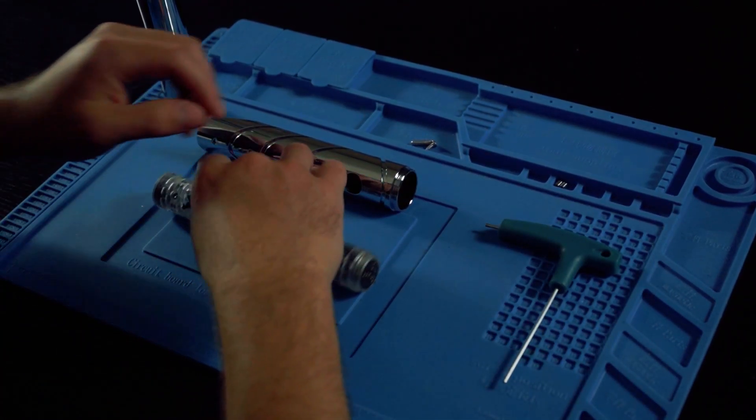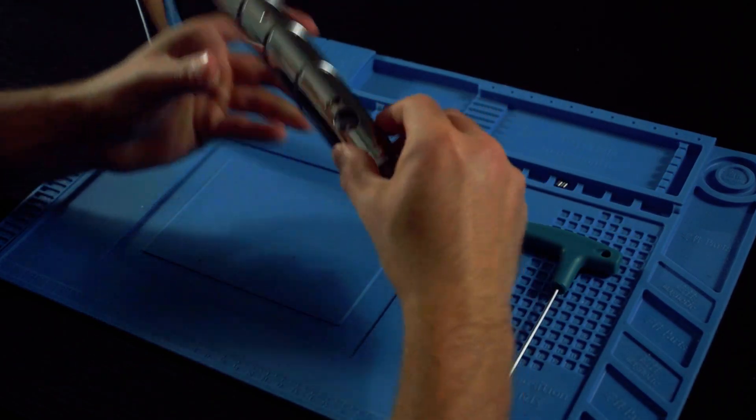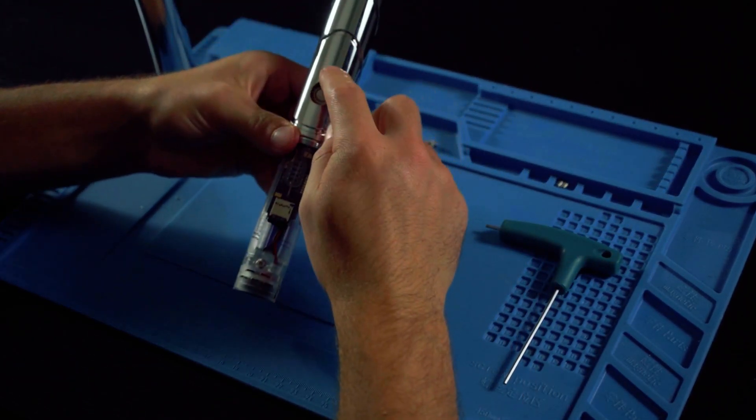To put it back together, we're going to go ahead and grab the top of the hilt, we're going to slide it in, and align the button and charge port.